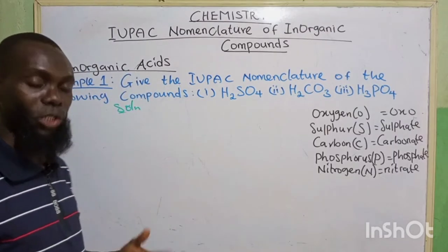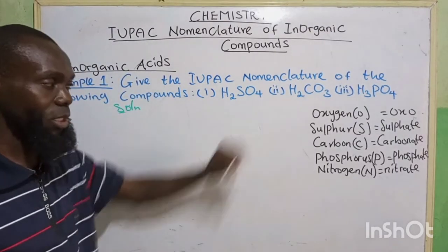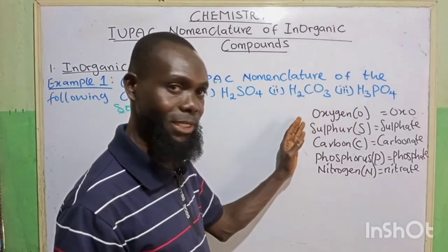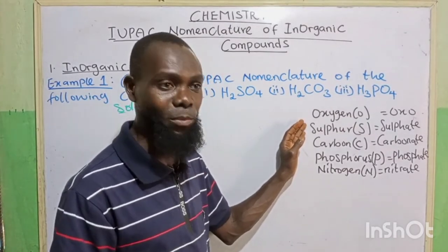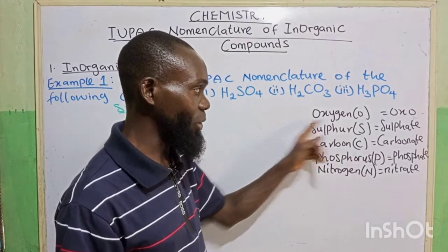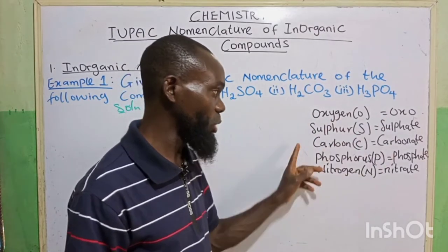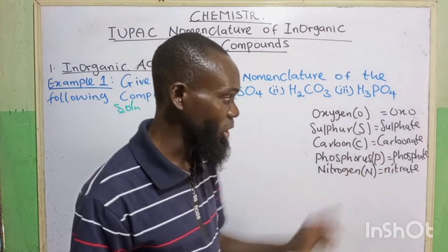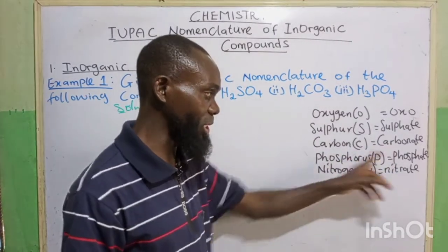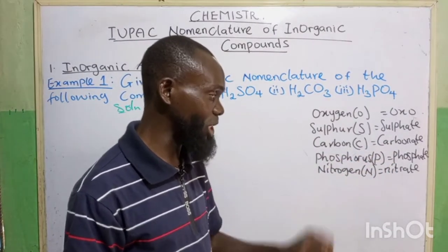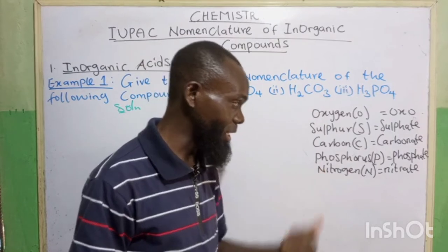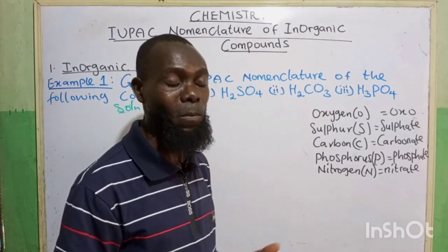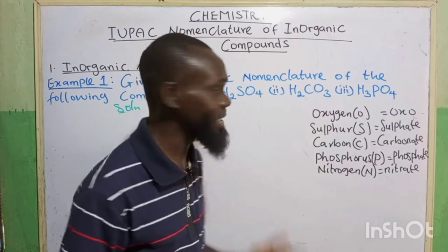Just before we move on to the second one, let's look at these elements and how they change during naming. Oxygen changes to oxo. Sulfur changes to sulfate. Carbon changes to carbonate. Phosphorus changes to phosphate. Nitrogen changes to nitrate. Manganese changes to manganate, and so on like that.